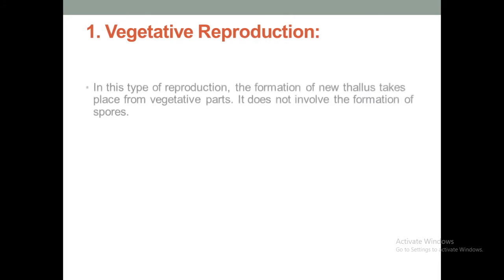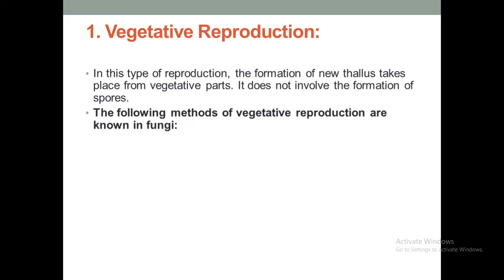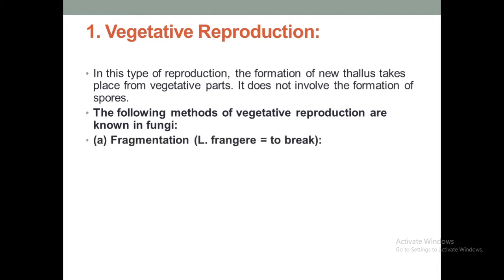First we will concentrate on vegetative reproduction. In this type of reproduction, the formation of a new thallus takes place from a vegetative part. It does not involve the formation of spores. The following methods of vegetative reproduction are known in fungi.